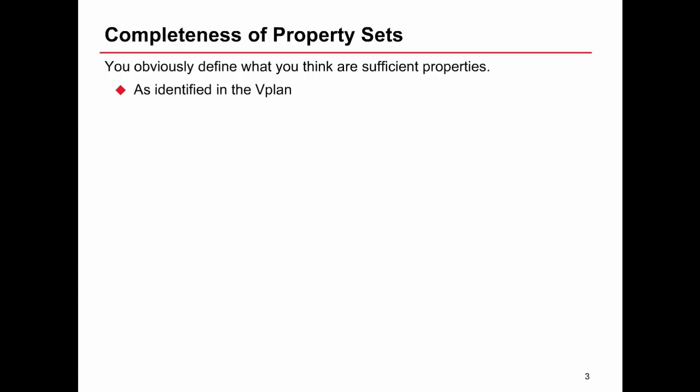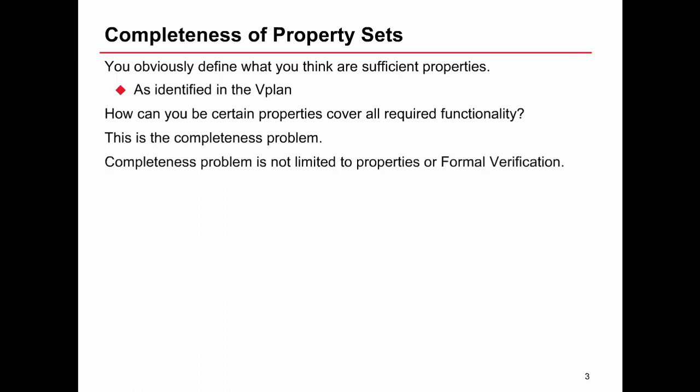Clearly our intention will be to define sufficient properties as identified in the verification plan to verify our design. How do we know that we've covered everything that we need to cover in terms of functionality? This is what's known as the completeness problem, and this isn't something that is created by SVA or the use of formal. This exists in any kind of verification.